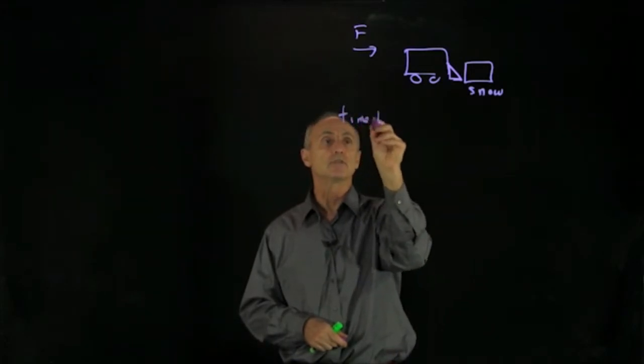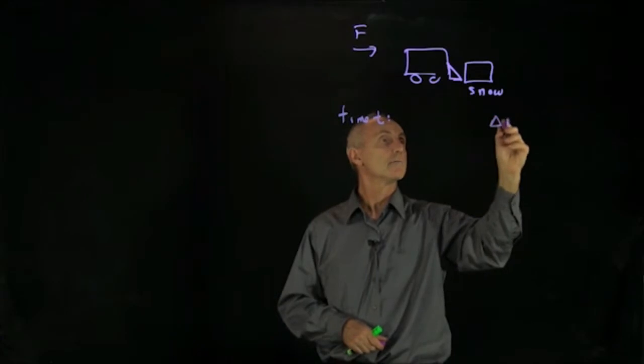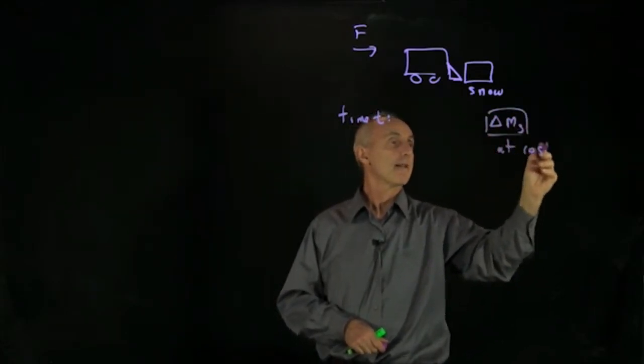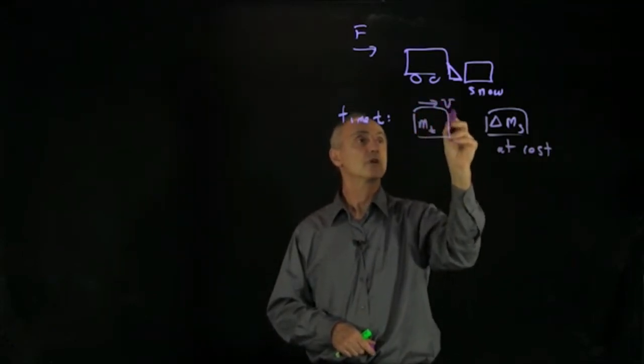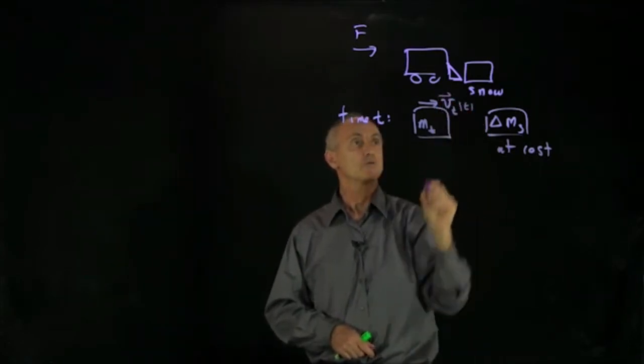What we're going to do is consider a certain mass of snow, delta ms, that's at rest. And our truck, with a fixed mass truck, is moving with a velocity vt at time t, v truck.